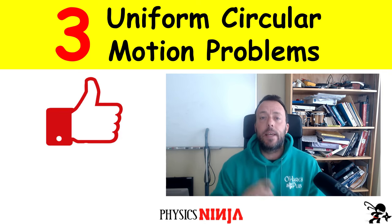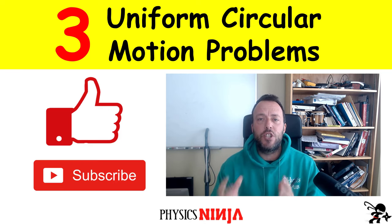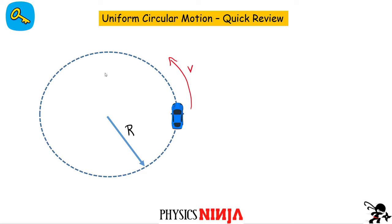Like with all my videos, if you like it give it a thumbs up and consider subscribing. Okay, let's get started. We begin with a quick review of some key points of uniform circular motion. The uniform part simply means that the speed must be constant.